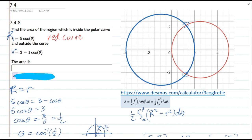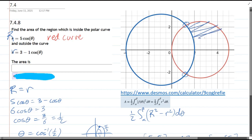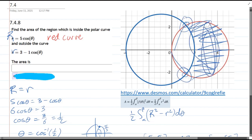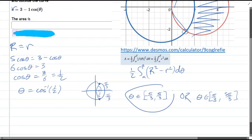We want inside the red, outside the blue. So we want this area. Here's pi over 3 and negative pi over 3. Looking at the graph, it goes negative pi over 3 to positive pi over 3.